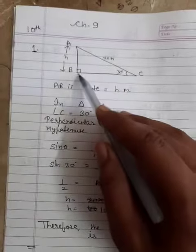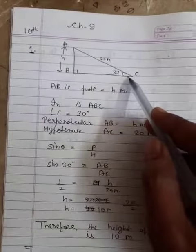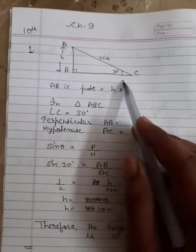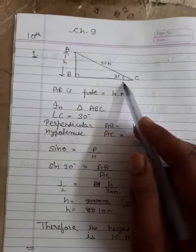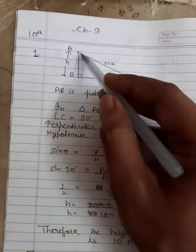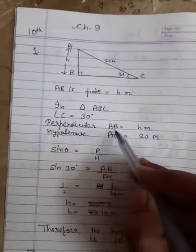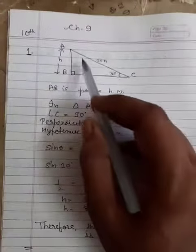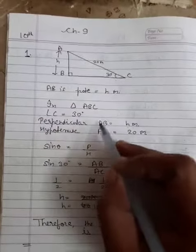In right triangle ABC, angle C is 30 degrees. The opposite side to the angle is the perpendicular. So the perpendicular is AB with height h meters, and the hypotenuse AC is 20 meters.